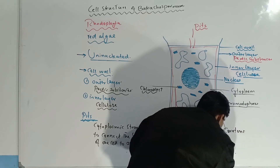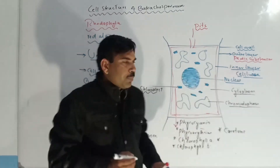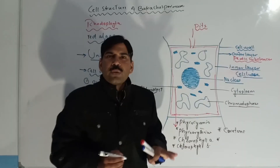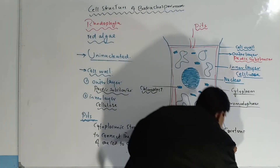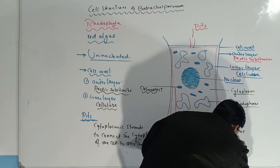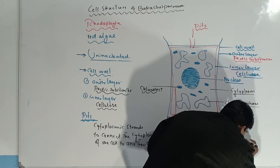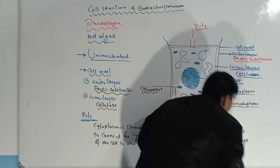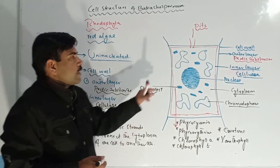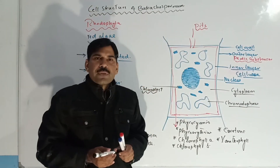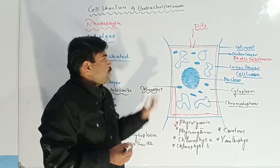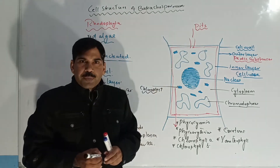And a very important pigment present in this cell is xanthophyll. Xanthophyll is also present in these chloroplasts, which gives the specific color to the plant body of Batrachospermium.